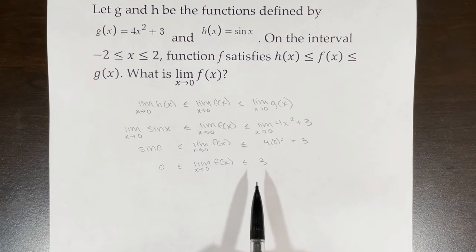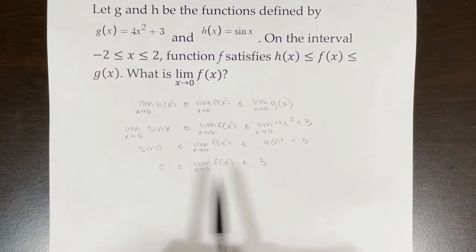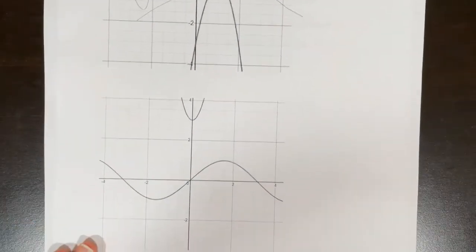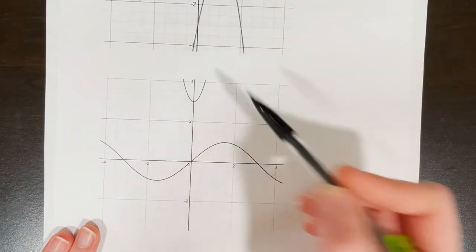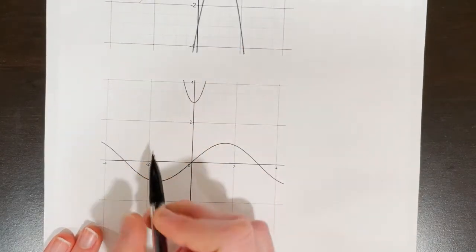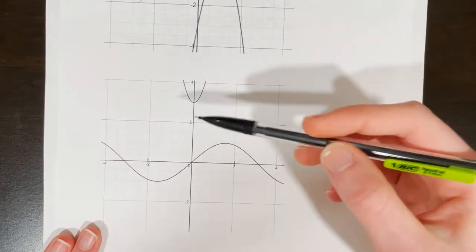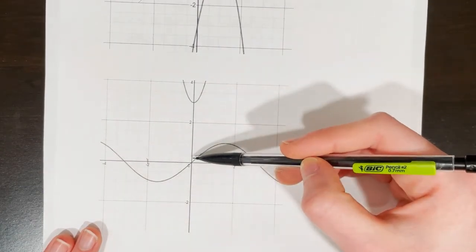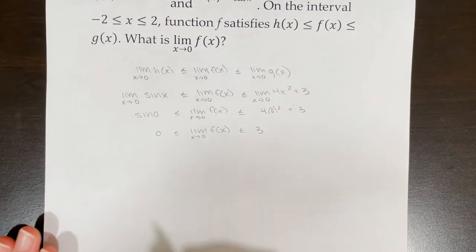So in this case, while the squeeze theorem is helpful for determining what the limit is between, it doesn't give us an actual limit value. Looking at the graphs of h(x) and g(x) on the interval between −2 and 2, we know the limit of f(x) is somewhere in between, but we don't know where. So unfortunately for this problem, we need to write: it cannot be determined.